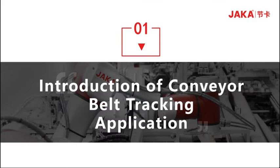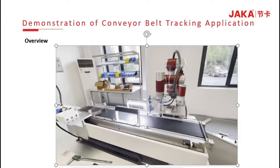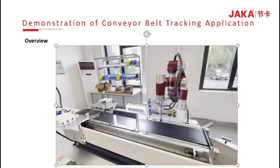Introduction of conveyor belt tracking application. This video is an overview of the application. The robot is tracking and gluing the product, then it takes the product out.